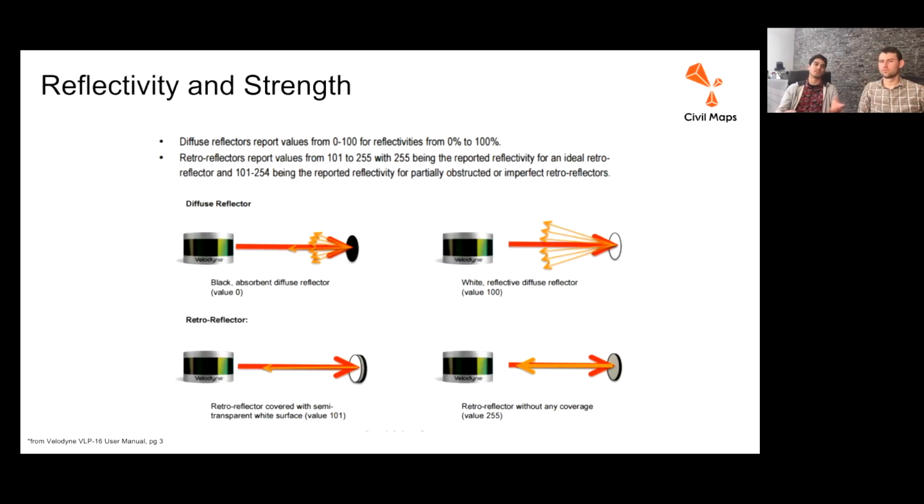Things like trees, houses, the pavement, sidewalks are less retro-reflective, and accordingly, we characterize those differently.